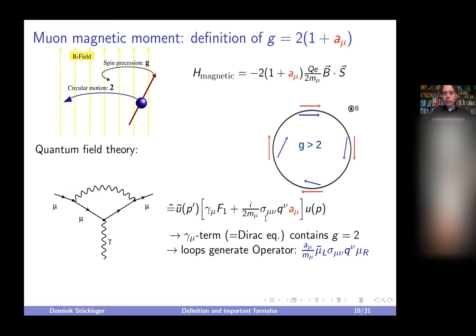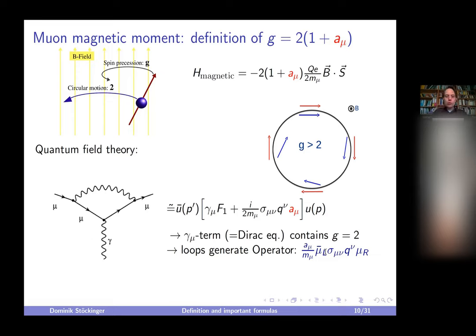In the covariant decomposition, you get a term proportional to the γ^μ matrix and another proportional to σ^μν. The γ^μ term comes from the ordinary Dirac equation and gives g = 2 exactly. The σ^μν term is not present at tree level but is generated from loop effects. These loop effects generate an effective operator with σ^μν, and its coefficient is directly related to g-minus-2.